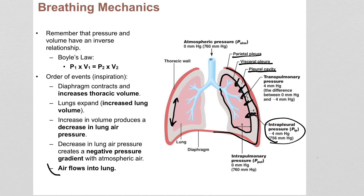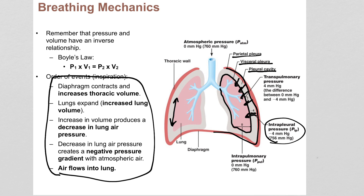To summarize inhalation: the diaphragm contracts, lung volume goes up, and air flows in because we have a pressure gradient from high to low. That is inhalation — it all follows Boyle's Law, which states that pressure and volume have an inverse relationship. Pressure goes up when volume goes down, and pressure goes down when volume goes up. We're just manipulating that to control whether air flows in or out.